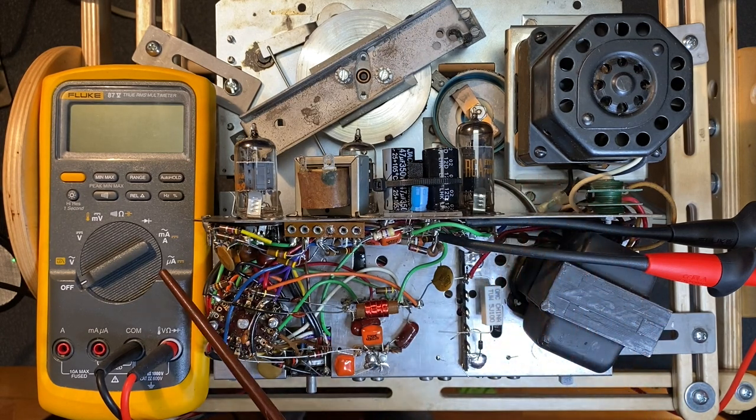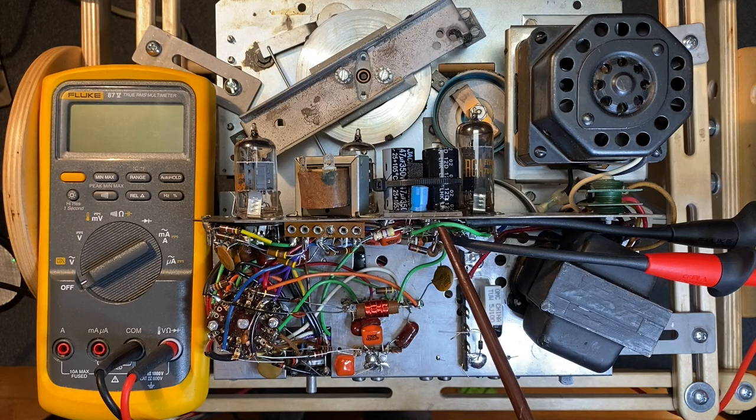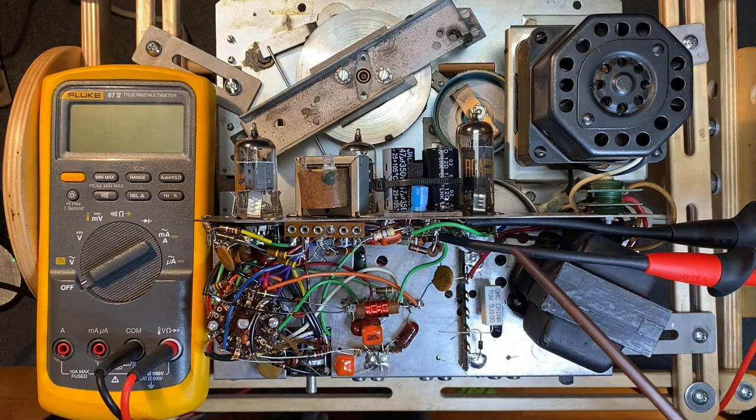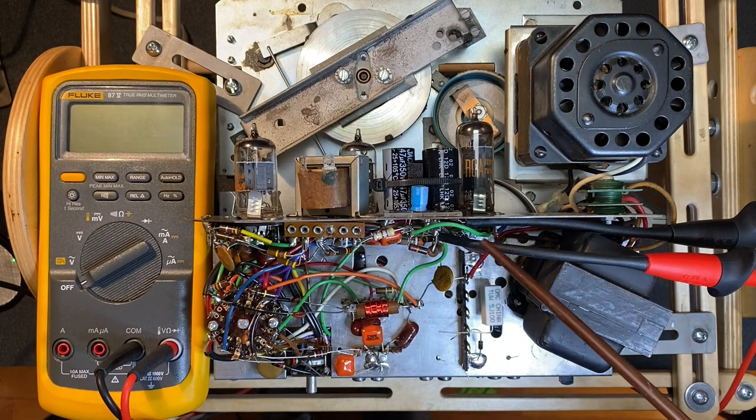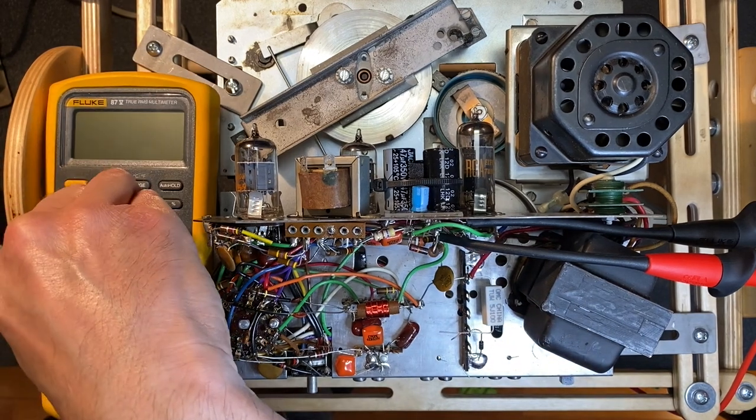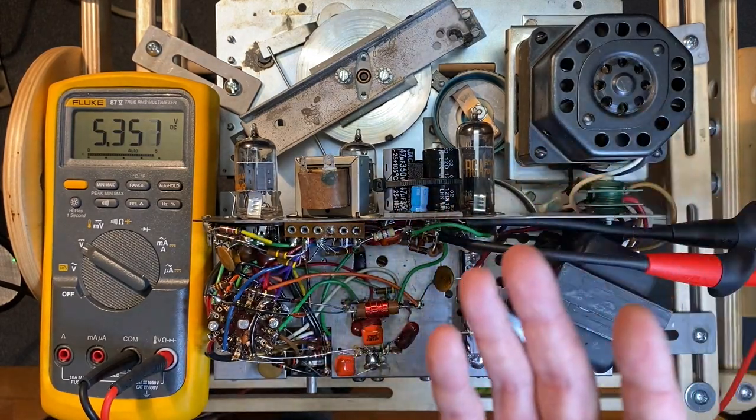So to test the voltage, I have our fluke meter attached to one of the electrolytics that we replaced, which is supposed to provide 163 volts. So let's power up our tape player now to its rated 120 volts, and see how well our selenium rectifier replacement circuit is supplying the required 163 volts.